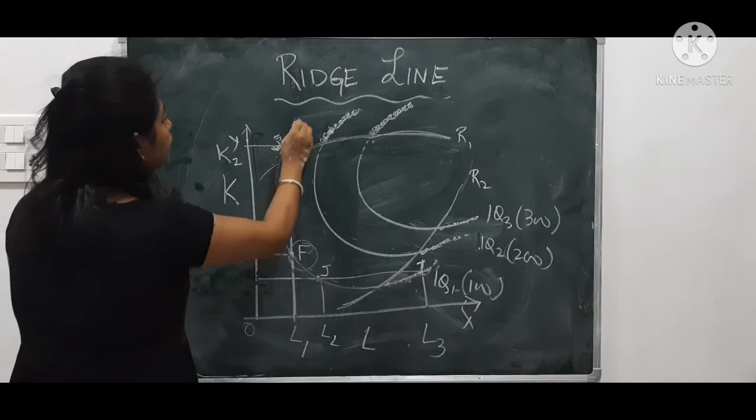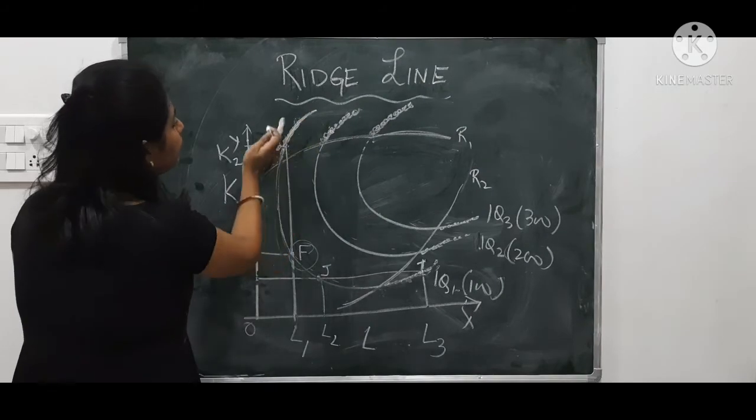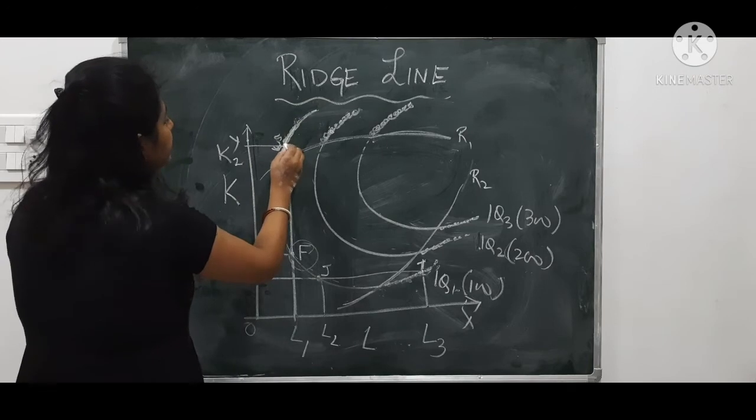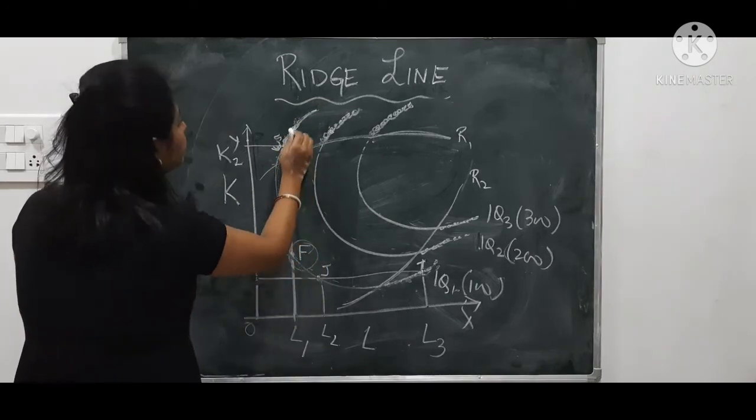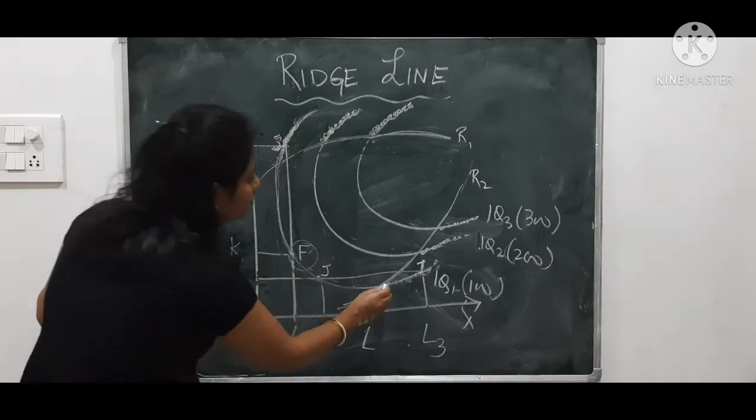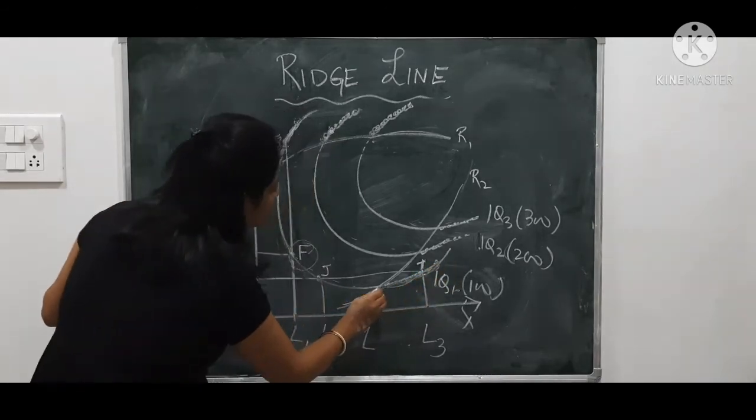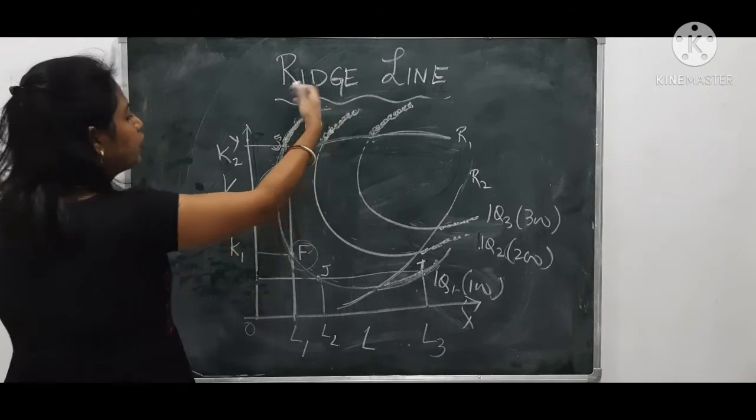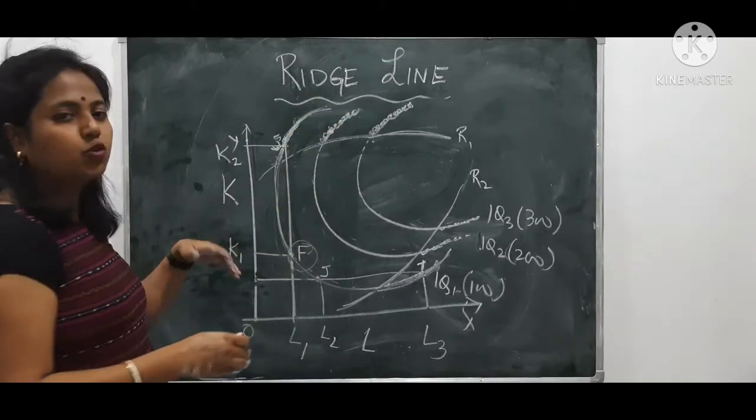Remember, that portion onwards where the curve is upward sloping. See from here it is upward. Here the slope is like this, but this slope is upward. Here also the slope is upward, it goes upward. So that part of the curve which is upward sloping, we will consider to be inefficient.